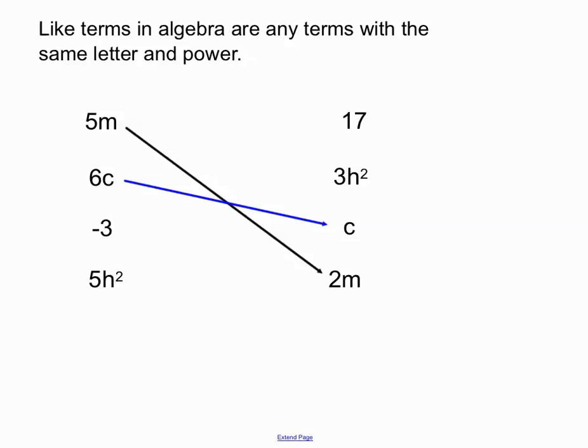Same with 6c and c. They're both having the same letter and power. I know they've got different numbers out the front but still. We also have normal numbers. Minus 3 and 17 are both numbers on the number line. We'd call them like terms in a way.